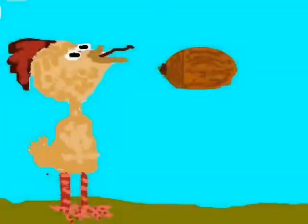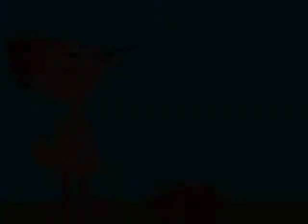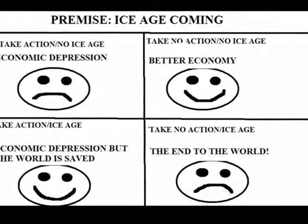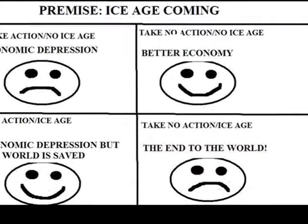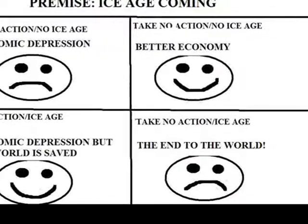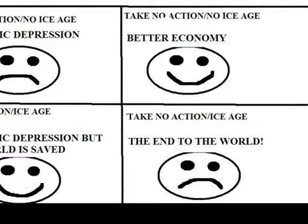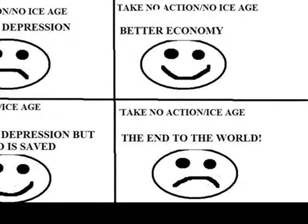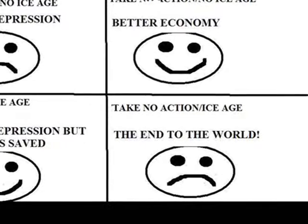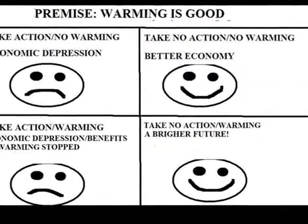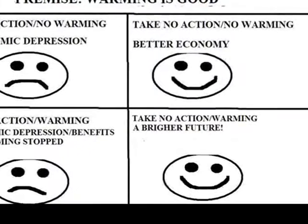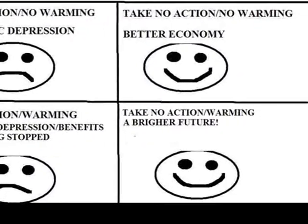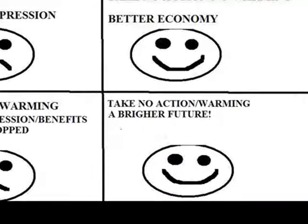You must assume what you are trying to prove is true in order to get the conclusion you want using Pascal's Wager. We could just as easily assume there is global cooling and that lack of action to prevent it is too risky, or that the action we take will fail to prevent the climate from changing, or that any change in climate will not cause the world to end — that the world will be better off. We can create any conclusion we want by simply changing the assumptions. This is why Pascal's Wager is so pointless, and why real science relies on empirical evidence to determine who's right.